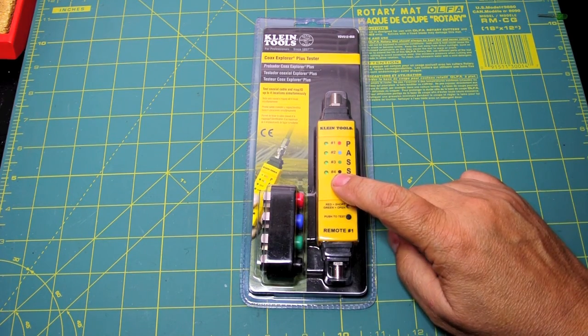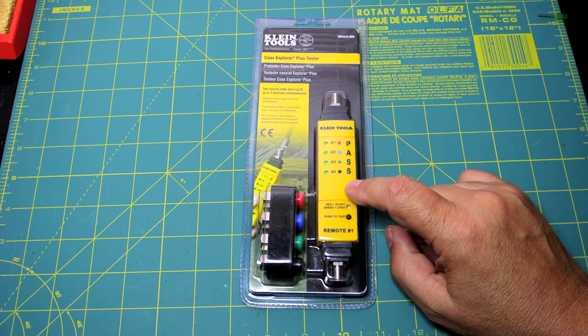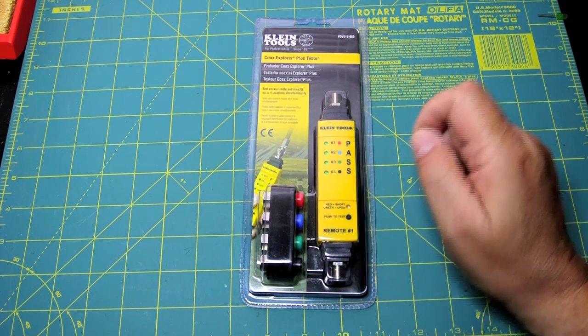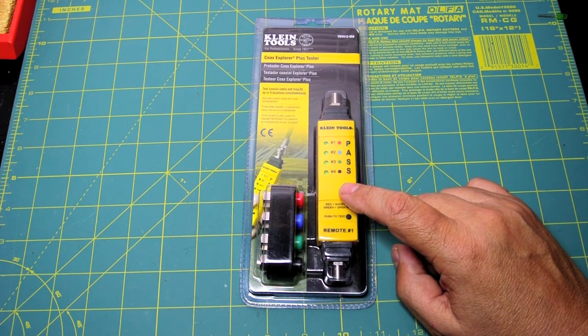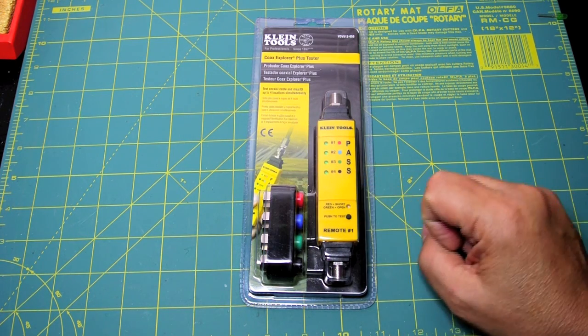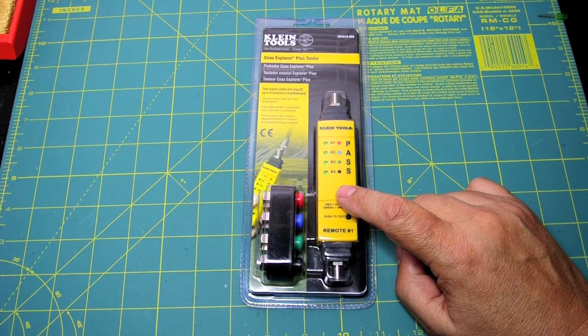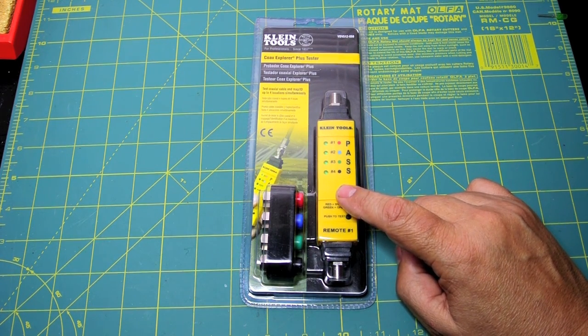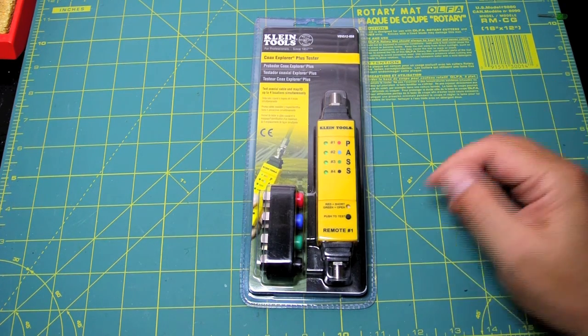And I'm going to use this Klein coax explorer plus tester to test out all my cable TV circuits. The way this works is you have four terminators. Now the only issue I have with this is that the batteries are not replaceable. So when the batteries in this thing die you throw it away, which really is kind of strange in today's recycling conscious environment that they would just throw things away like this.